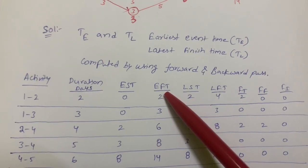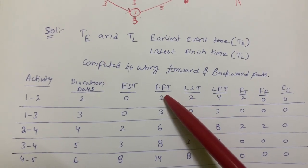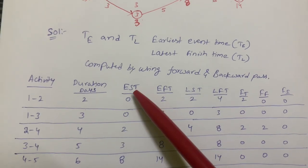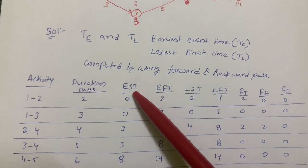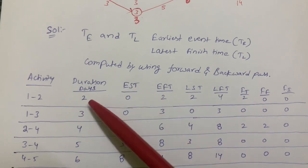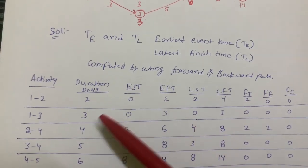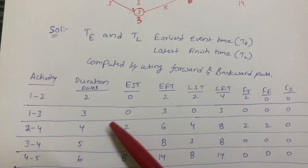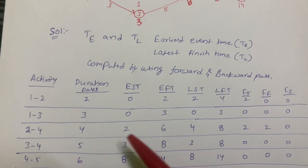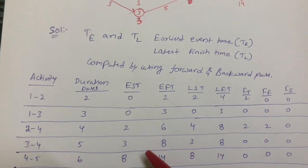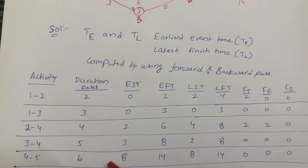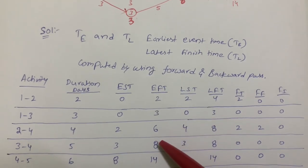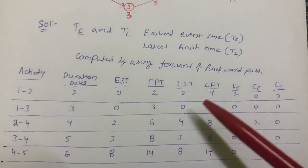After calculating EFT, we derive EST by subtracting duration: EST = EFT − duration. So: 2 − 2 = 0, 3 − 3 = 0, 6 − 4 = 2, 8 − 5 = 3, and 14 − 6 = 8.